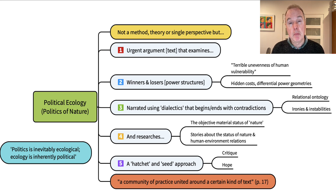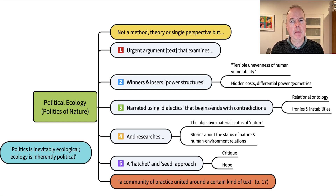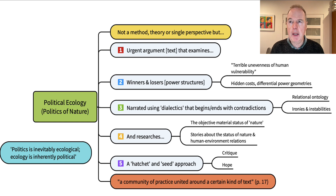It's shaped by culture and by the particular structures that humans have established across the planet. The major structure that political ecologists address is capitalism. Capitalism is simple to say, but what that means in practice, in particular places, has to be determined, documented, and empirically investigated. Political ecology is not a method, a theory, or a single political perspective — it's a gathering place for various types of texts: academic studies, reports, videos, and more activist engagements. It is an urgent argument.